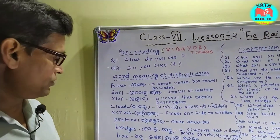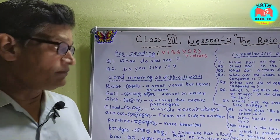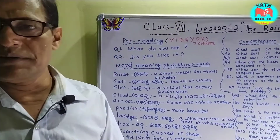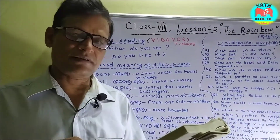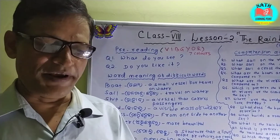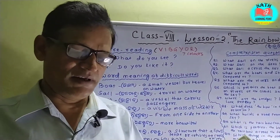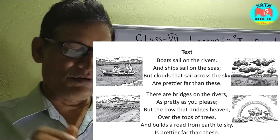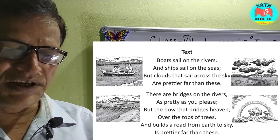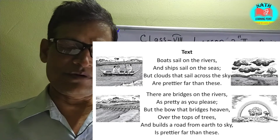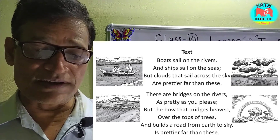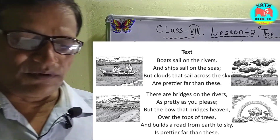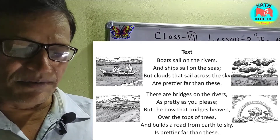Then I shall ask you some comprehension questions. You try to give the correct answers. Now I express the real meaning of this poem — you try to understand and look at your book. Boats sail on the rivers means boats travel on the rivers. And ships sail on the seas. But clouds that sail across the sky are prettier far than these.